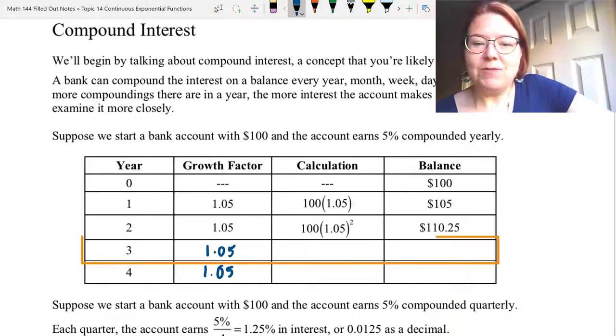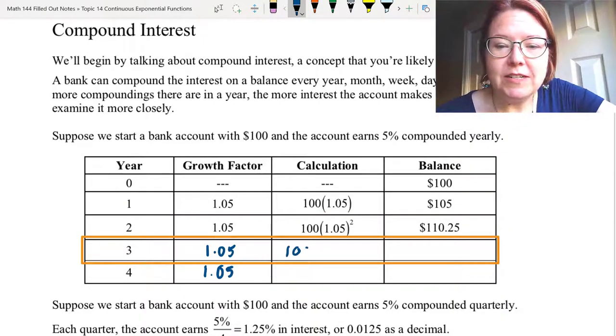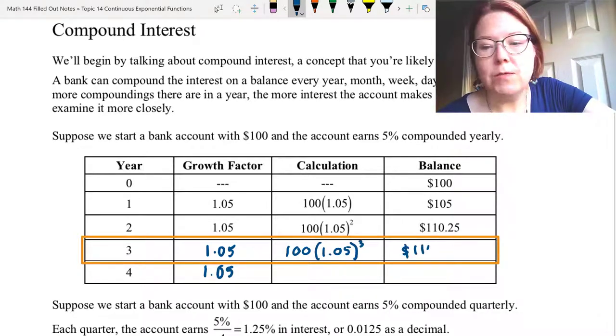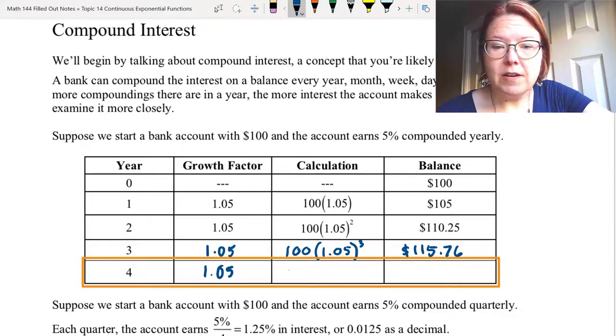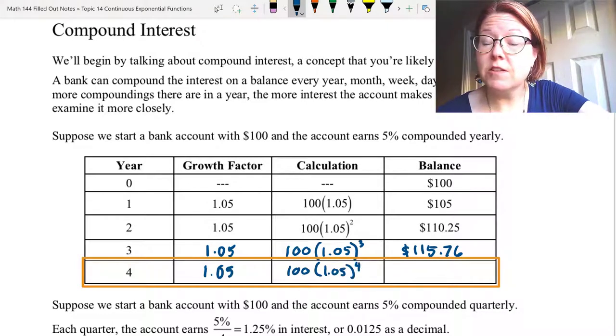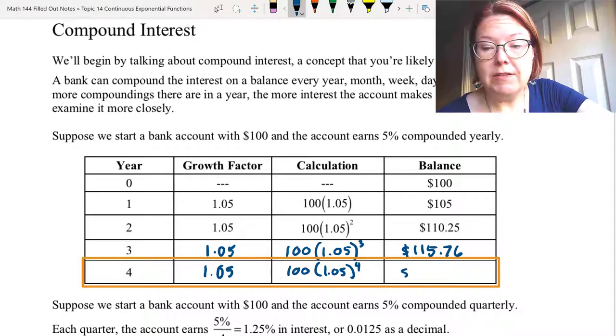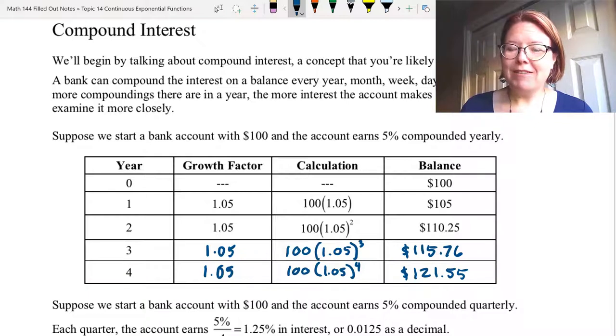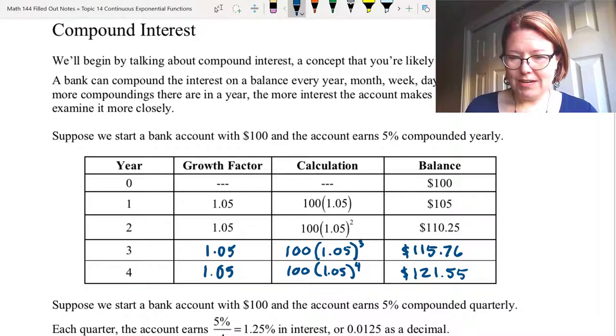Similarly, we can do the calculation for year three. It's 100 times (1.05) to the third power, which results in $115.76. For the fourth year, our calculation is 100 times (1.05) to the fourth power, and the balance in year four would be $121.55. Slowly over time, you can see the balance increases as we continue to add interest.